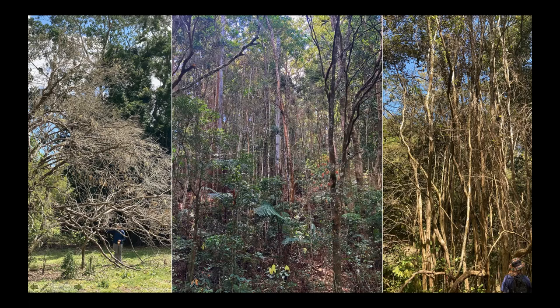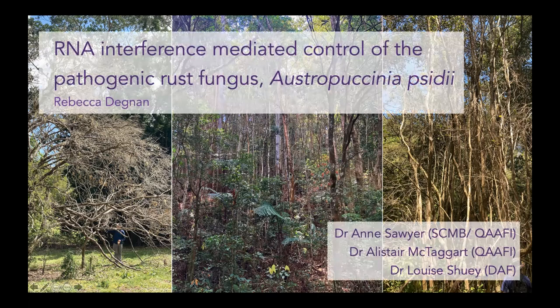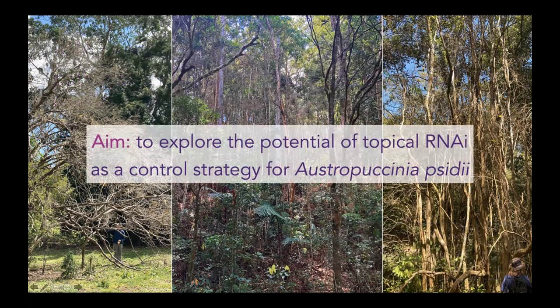In these photos here, you can see quite a lot of dieback. These were taken down just in the Bajra Valley, and the dieback you see is all actually as a result of myrtle rust, even on these quite old established trees. My project was called 'RNA interference mediated control of the pathogenic rust fungus Austropuccinia psidii,' and Austropuccinia is the causal agent of myrtle rust. My project was supervised by Anne Sawyer, Alistair McTaggart, and Louise Shuey.